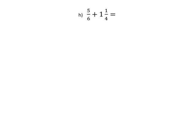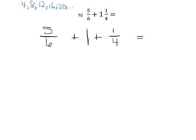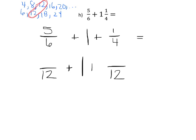So let's do that on this problem. We've got 5 sixths plus 1 and 1 fourth — I'll leave a little gap. We want to get a common denominator. A little trick I teach my students: let's write our 4 times table — 4, 8, 12, 16, 20 — and then skip count by 6s — 6, 12, 18, 24. We can see that 12 shows up in both lists, so that is our common denominator. So 5 sixths can be rewritten as twelfths, and 1 fourth can be written as twelfths, and we leave that one whole alone.